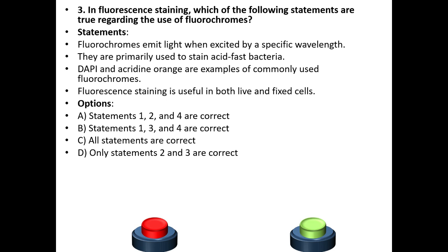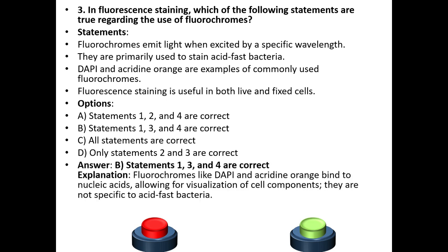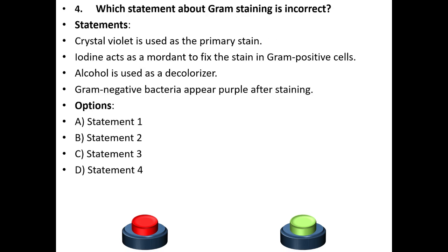Options A, B, C, D — which among the following is or are correct? The answer is B: statements 1, 3, and 4 are correct. Explanation: Fluorochromes like DAPI and Acridine Orange bind to nucleic acids, allowing for visualization of cell components. They are not specific to acid-fast bacteria.